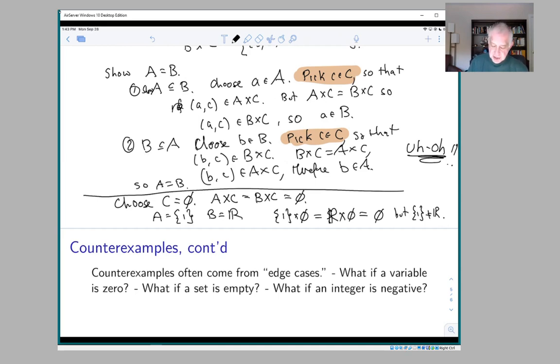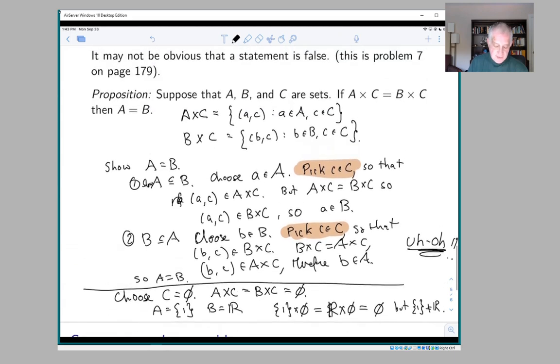If you put an additional hypothesis - if you add to the proposition the hypothesis that C is not empty - then our proof works, because then there is an element c in C and you can do this exact argument.